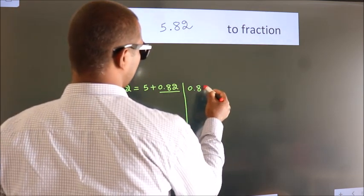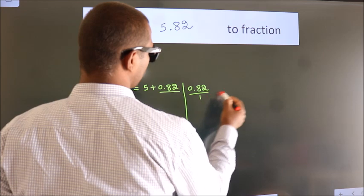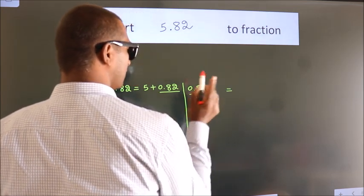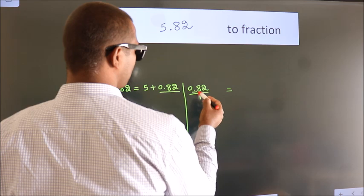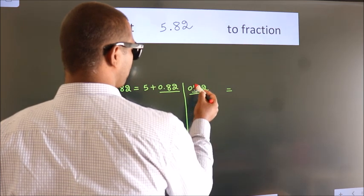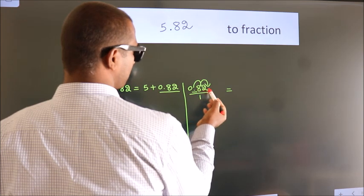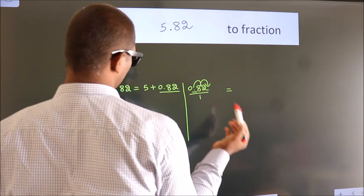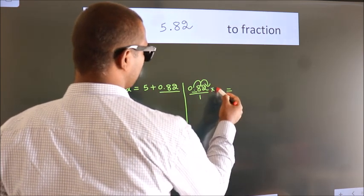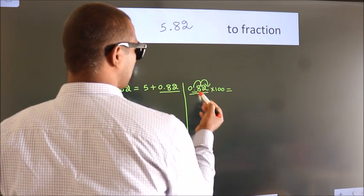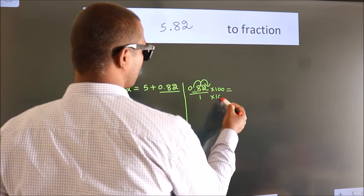So 0.82. To convert this to fraction, we have to move this decimal after 1, 2 numbers. To move this decimal after 2 numbers, multiply it with 100. Whatever you are multiplying in the numerator, in the denominator also do the same.